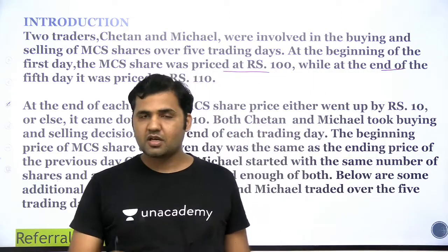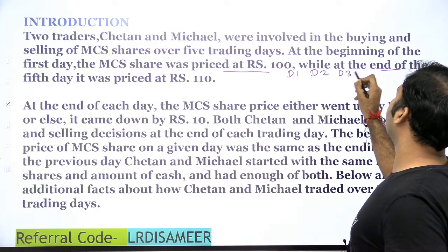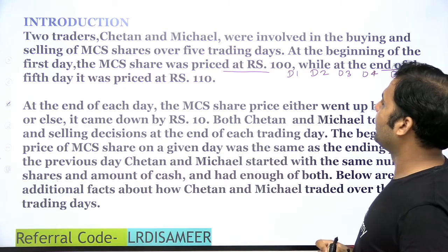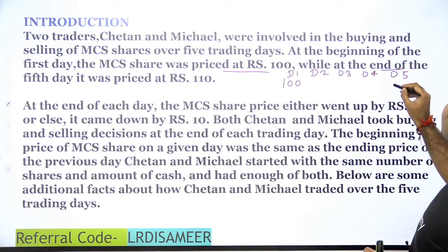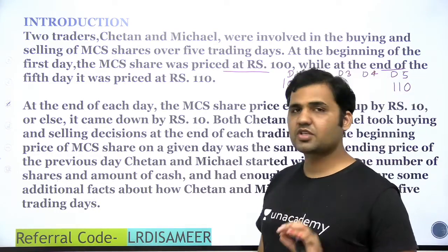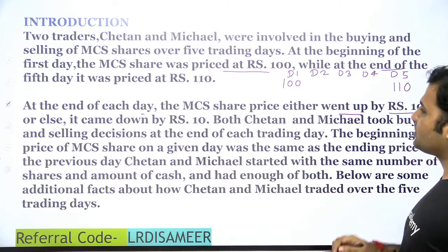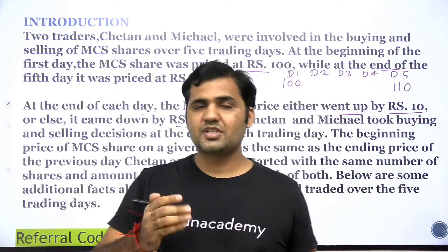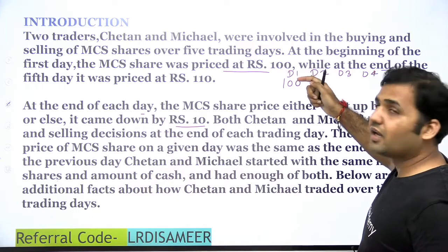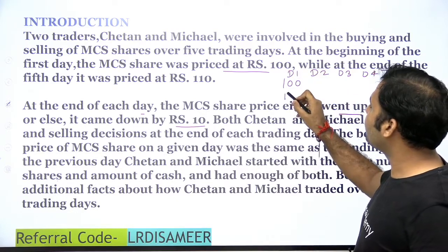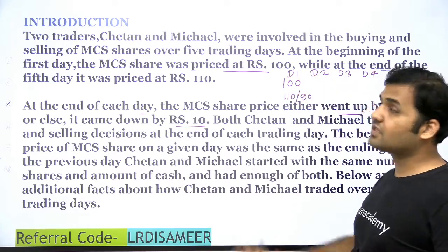Two key points to note: there are 5 trading days — Day 1 through Day 5. The MCS share was initially priced at rupees 100, and on the fifth day the stock price was 110. At the end of each day, the MCS share price either went up by rupees 10 or came down by rupees 10. So if the price starts at rupees 100, at the end of Day 1 it will either be 110 if it goes up, or 90 if it goes down.